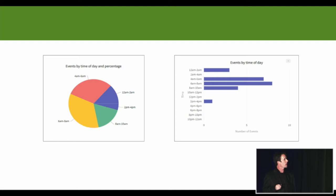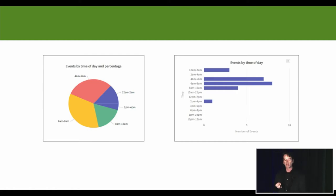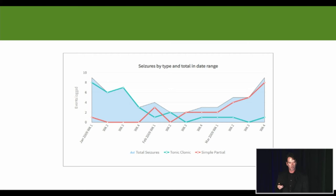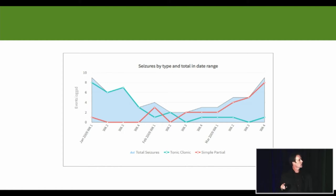By recording that type of data, we're able to visualize it in specific ways. This is a seizure by time of day chart. We launched this and right away started getting user feedback about how it was guiding therapy decisions — actually, just by adjusting medications, users were able to get better seizure control by switching up how they're dosed by time of day. This is seizure by type, so we can look at seizure severity or seizure type and see how therapies impact those different seizure types.